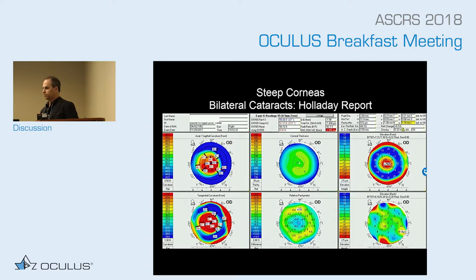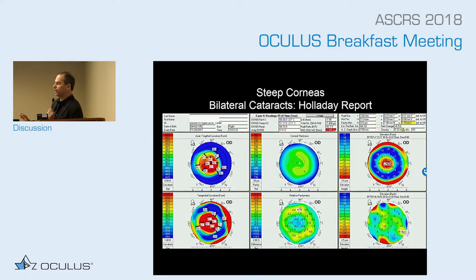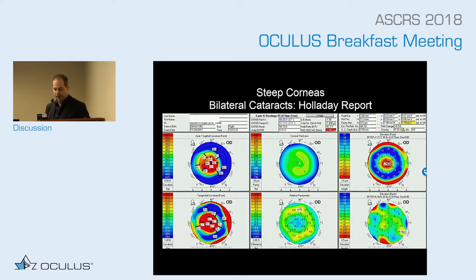We treat most LASIK on the pupil center, which is not on the visual axis. Studies by Dan Reinstein and others have shown that when you treat on the pupil you're actually eccentric relative to the visual axis and end up with coma. In that right eye it looks temporally dislocated because it was centered on the pupil, not on the visual axis. That alone causes visual performance questions and is also the reason you have a limit of about 3-4 diopters with hyperopic LASIK because of that optical consequence.